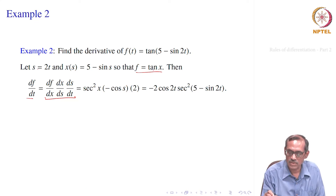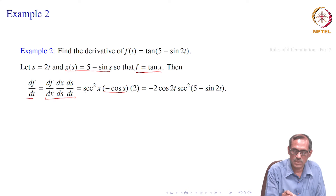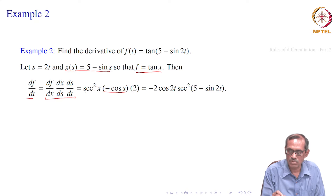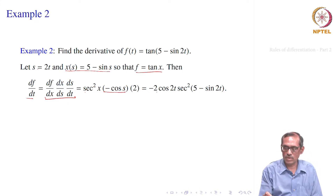So df/dx, which is the derivative of tan x, gives sec² x. Then dx/ds: the derivative of 5 minus sin s gives minus cos s. And ds/dt, the derivative of 2t, gives 2. Simplifying, you get minus 2 cos s · sec² x, and replacing in terms of t: minus 2 cos(2t) · sec²(5 minus sin 2t). That is how we use the chain rule.